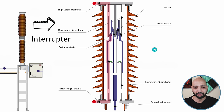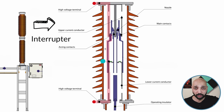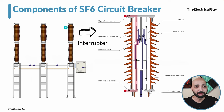This entire assembly is enclosed inside porcelain insulators or silicon composite insulators — both options are available. That is the interrupter. There will be one incoming and one outgoing terminal, so you connect the line on one side and the line continues from the other side. Basically, this switch is connected in series with the system.